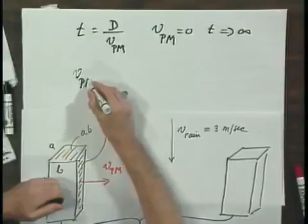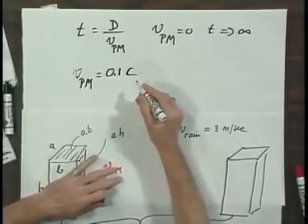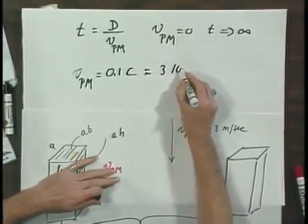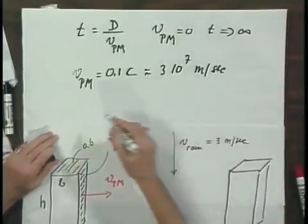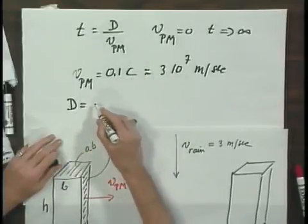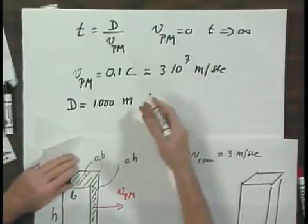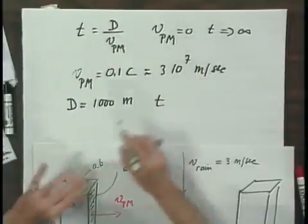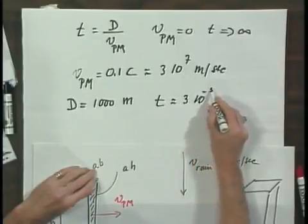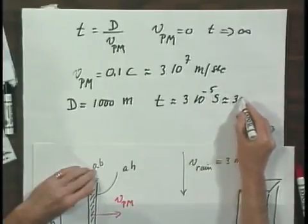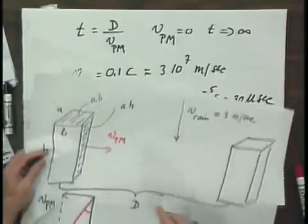Now we take the situation of an absurdly high speed — say 10% of the speed of light. There's no way they could go that fast, just for the sake of argument. The velocity of Peter and Miri is 0.1 times the speed of light, which is about 3 times 10 to the 7 meters per second. Taking d equals 1,000 meters as an example, the time for Peter and Miri to reach home is D divided by the speed, approximately 3 times 10 to the minus 5 seconds, which is about 30 microseconds.